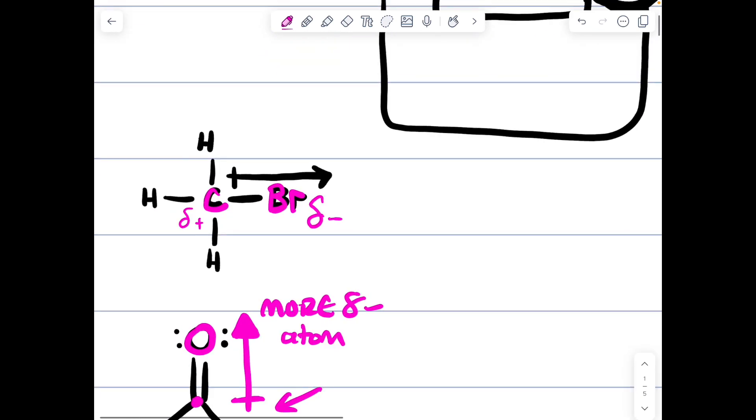For example, we have a bromine nearby a carbon. Bromine is more electronegative than a carbon. It is going to steal electrons from it. That is why we represent via a dipole arrow pointing towards the bromine, which is the more electronegative atom, where it is denoted as a delta minus electronegative and the carbon is denoted as delta plus electropositive because it loses the electrons to the bromine that steals it from it.